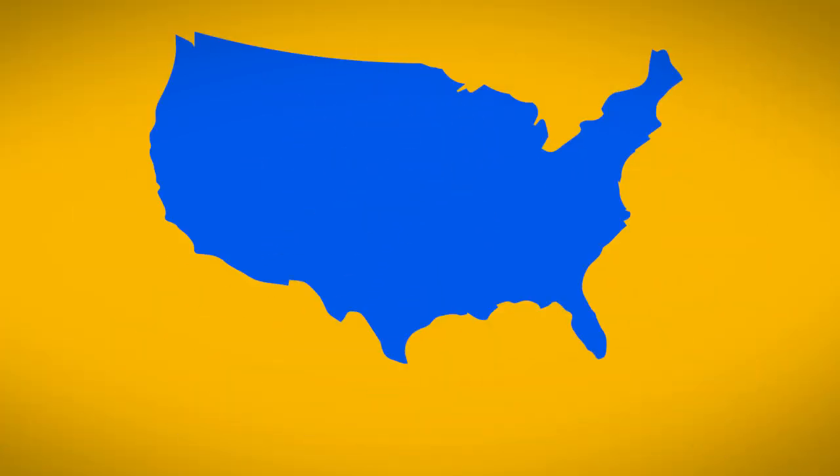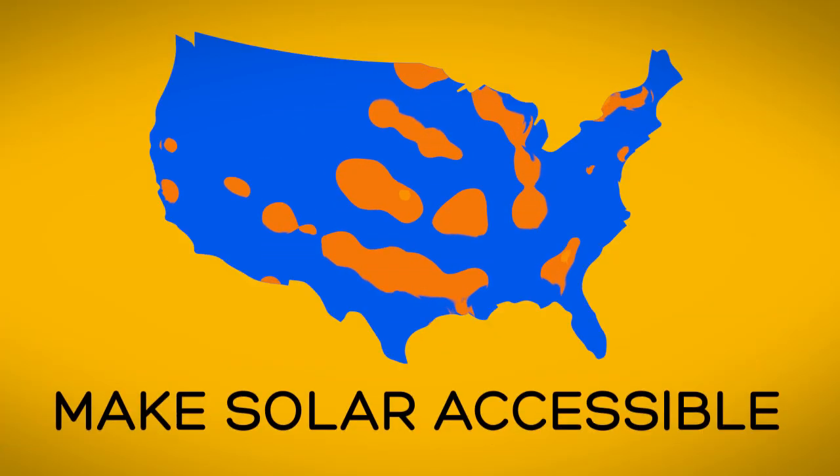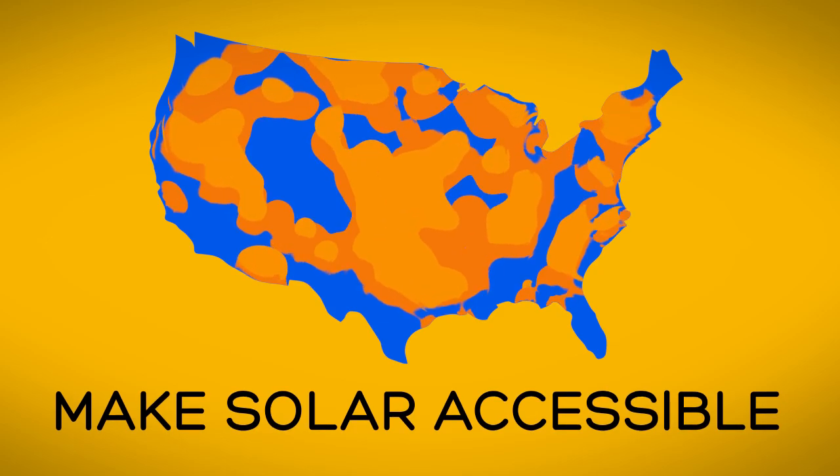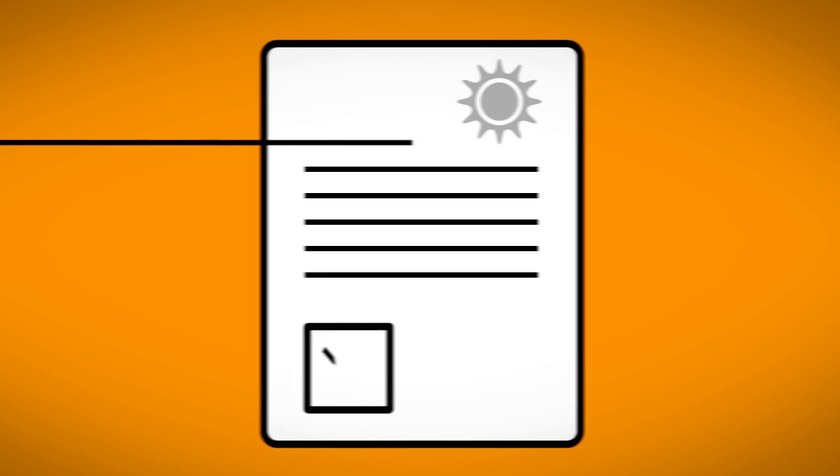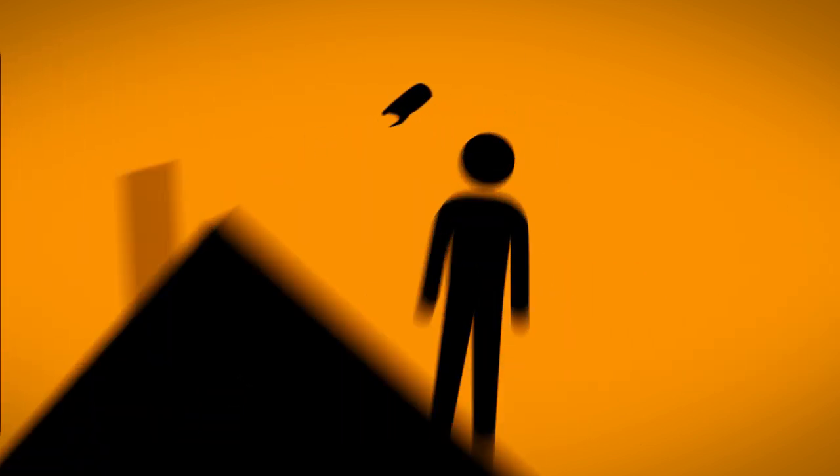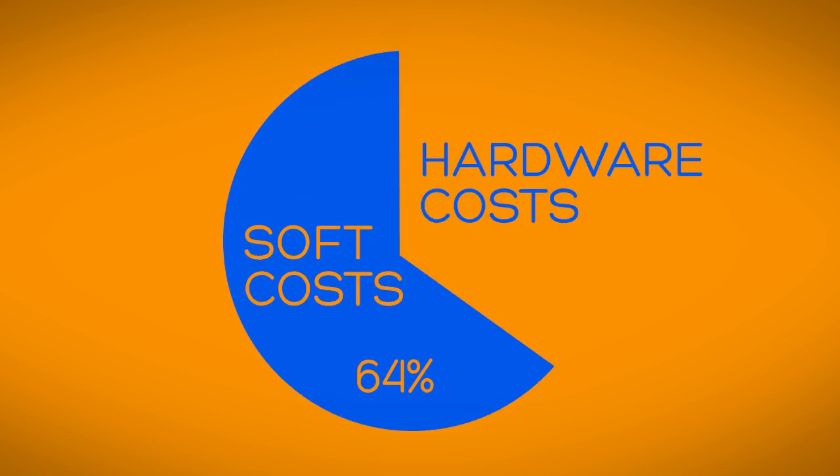Despite growing capacity and falling costs of solar panels, soft or non-hardware costs remain an uphill obstacle, one that solar must overcome to surpass a tipping point and make solar accessible to everyone. These soft costs include grid connection, permitting, installation, consumer education and financing, and they account for as much as 64% of the total cost of new solar systems.